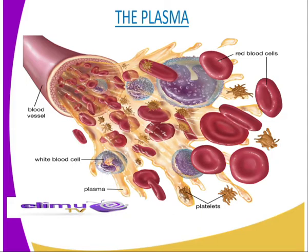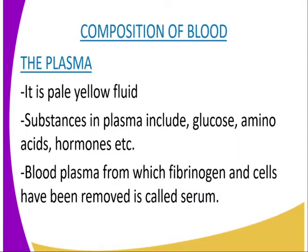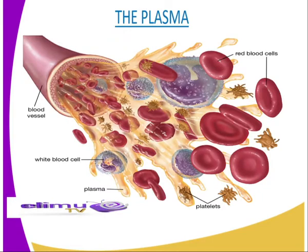Substances in plasma include glucose, amino acids, hormones, some enzymes, vitamins, lipids, and waste products of metabolism such as carbon dioxide and urea. Also contained in the plasma are plasma proteins such as antibodies, albumin, and fibrinogen.